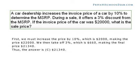A car dealership increases the invoice price of a car by 10% to determine the MSRP. During a sale, it offers a 3% discount from the MSRP. If the invoice price of the car was $20,000, what is the sale price? First, we must increase the price by 10%, which is $2,000, making the price $22,000. We then take off 3%, which is $660, making the final price $21,340. Thus, the answer is C, $21,340.